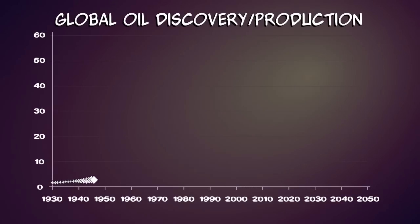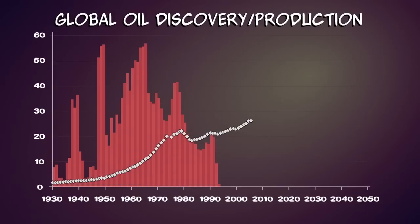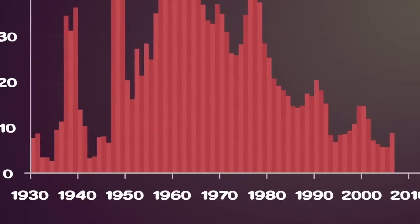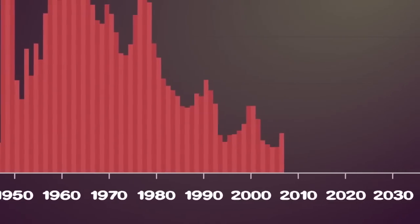Evidence is now mounting that world oil production is peaking, or is close to it. Globally, the rate of discovery of new oil fields peaked in the 1960s. Over 40 years later, the decline in discovery of new fields seems unstoppable.